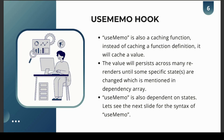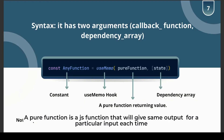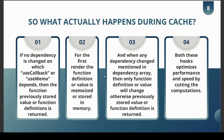The syntax of useMemo is similar to useCallback — it takes a pure function and a dependency array. A pure function here takes no arguments and returns a value. You can store the result in a constant or any variable.